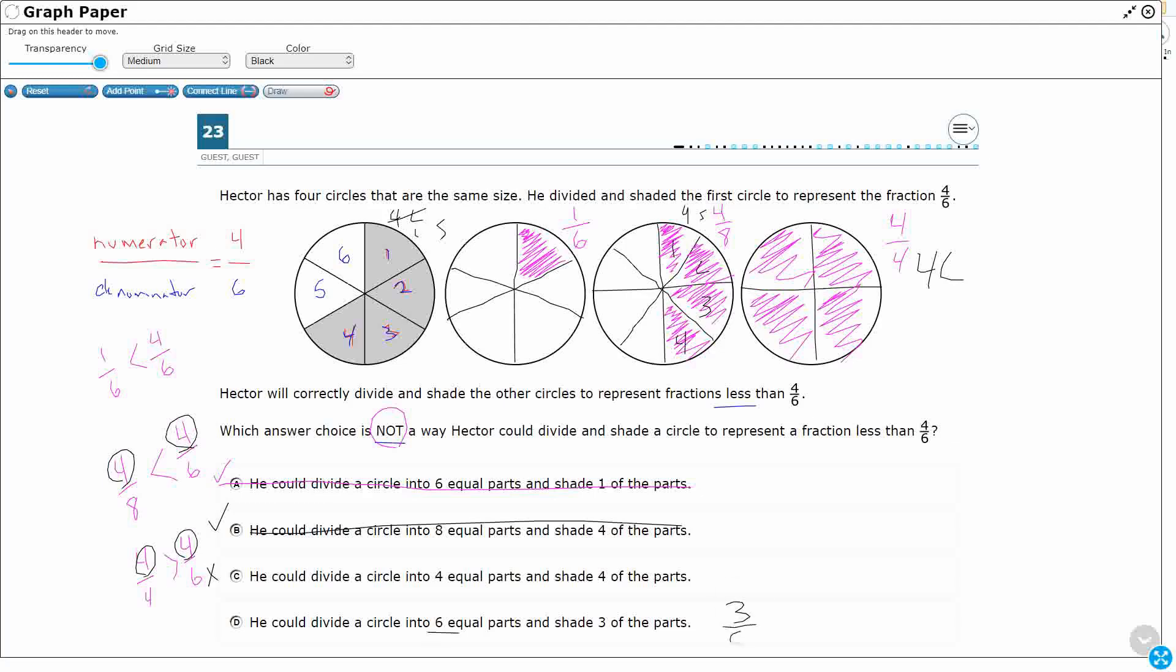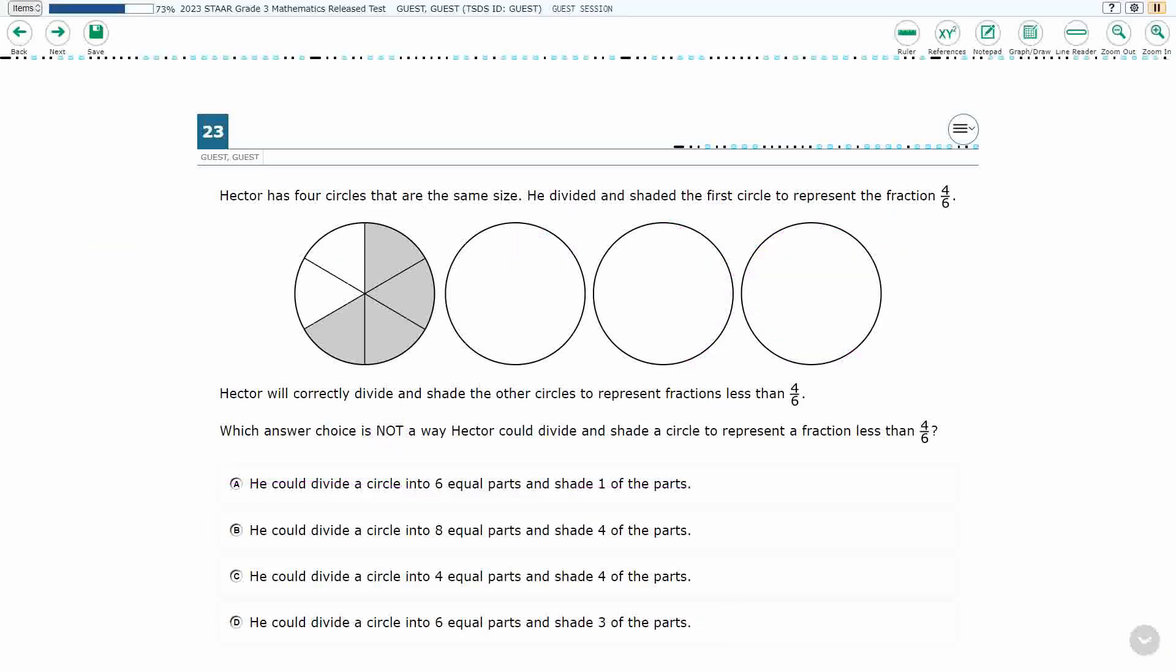And if I did this, this would be 3/6, right? So that's the same denominator. 4/6 is going to be greater than 3/6, so I don't want this. So my answer here is C.